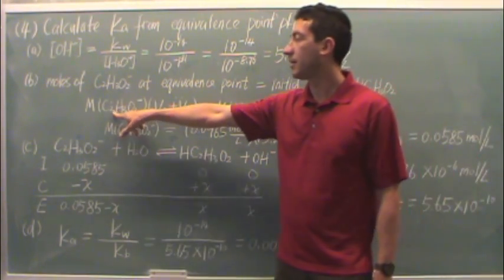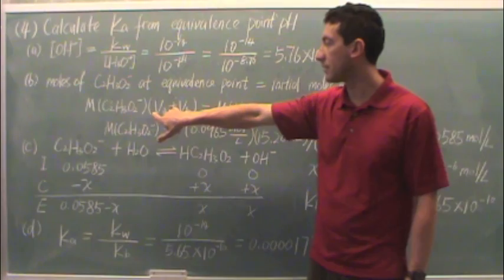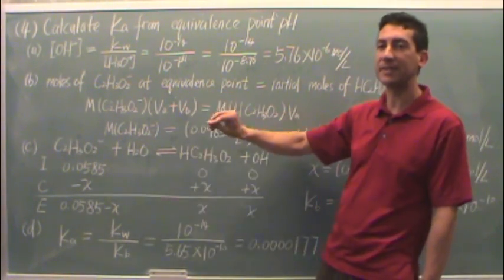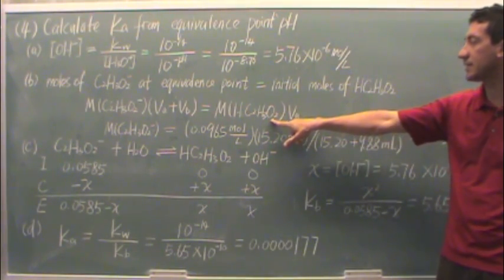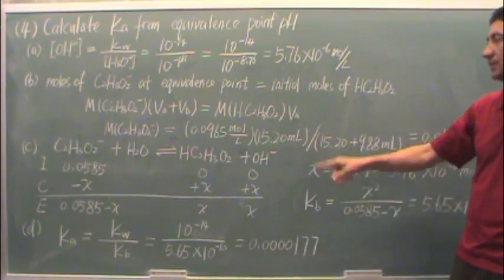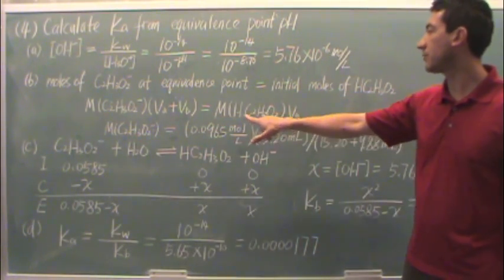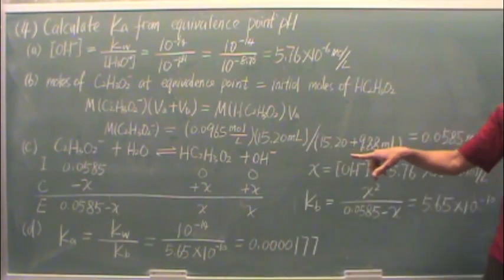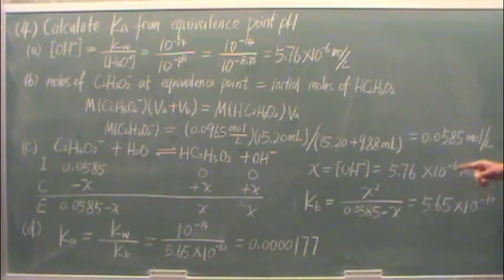So what you're going to see, the moles of the acetate ion is the molarity times the total volume. That's the initial volume of the acid plus the volume of the base added, and that equals the molarity of the acetic acid times the volume of the acetic acid. So just plugging these in, we got the molarity equals the molarity of the acetic acid times its volume. We have both of those numbers divided by the total volume, which we gave you those numbers earlier.